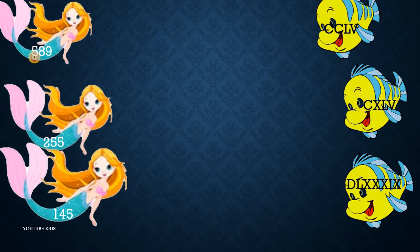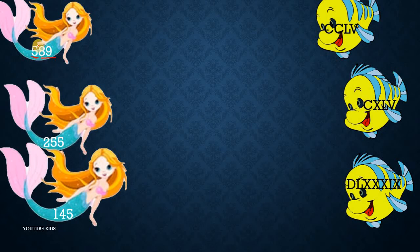Now for an activity, we have to match the mermaids with the fishes. We have 5, 8, and 9. In 589, we know 89 is LXXXIX. First we look at the starting number, which is 5. The place value of 5 here is 500, and 500 is D. So we look for fishes having D and match that mermaid with that fish.